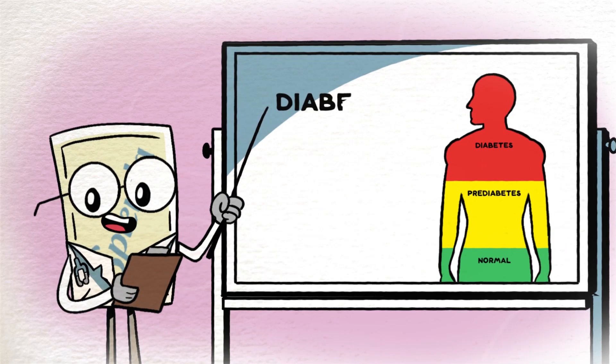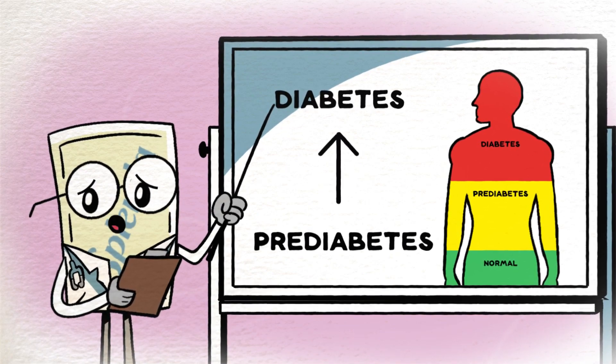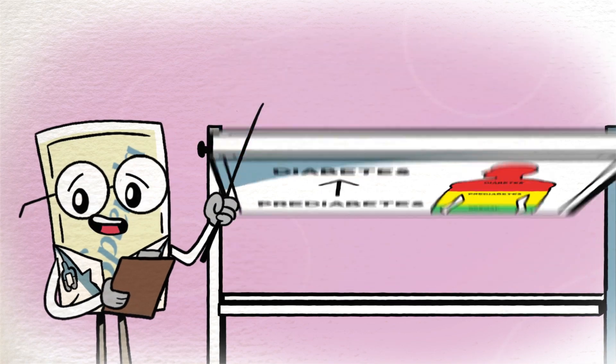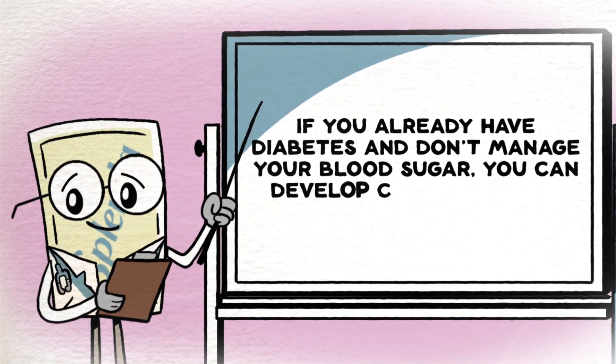If you have prediabetes and don't manage your blood sugar, it can turn into type 2 diabetes, which is permanent. If you already have diabetes and don't manage your blood sugar, you can develop complications.